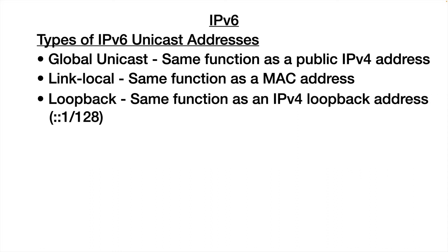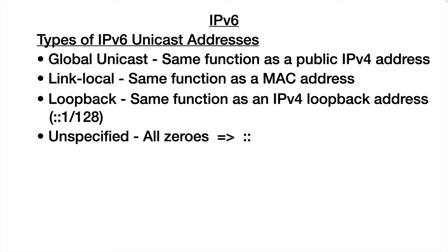In IP version 4, the loopback address most often used is 127.0.0.1, but anything starting with 127 in the first octet is a loopback address. In IP version 6, the loopback address is ::1 — one of the shorter IP version 6 addresses. Even shorter is the unspecified address, which is all zeros and can simply be represented as :: .